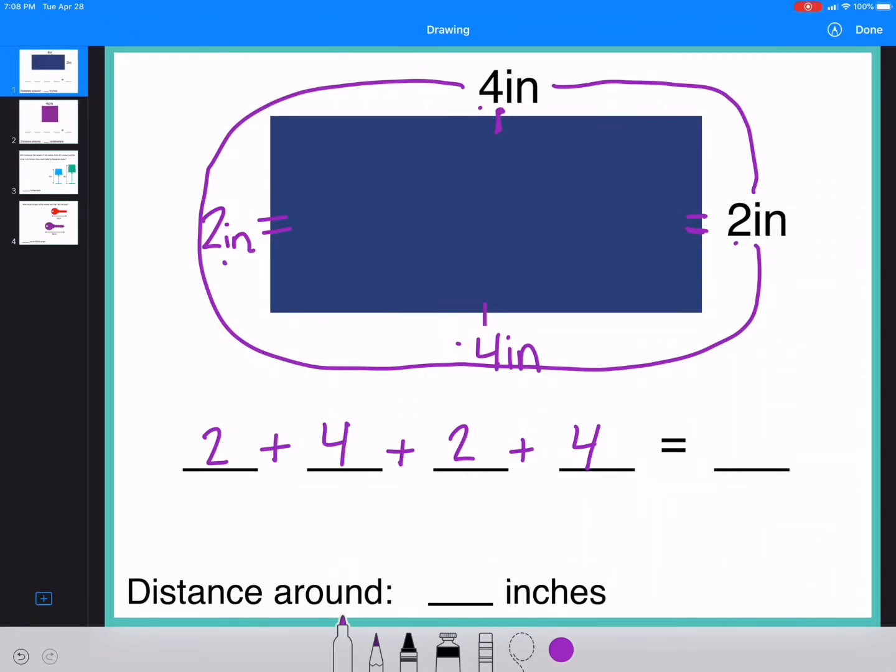Now there's a couple of ways that you can add this, but we can do our first two numbers first. So 2 plus 4 is 6. And then do our second problem, 2 plus 4 is 6. Then I can do 6 plus 6 equals 12. So the distance around is 12 inches. We want to make sure we write inches so we know we're not talking about bananas.